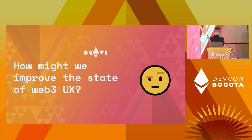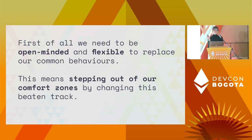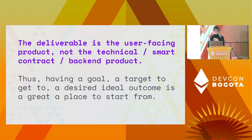We learned why most of the UX resides in the smart contract, we learned the current situation in Ethereum product building and the issues of the current flow. So how might we improve the state of web3 UX? First of all, we all need to be open-minded and flexible to replace our common behaviors — stepping out of our comfort zones. We need to reframe the deliverable: the deliverable is the user-facing product, not the smart contract, not the back-end. Having a goal, a target, a desired ideal outcome is a great place to start from.